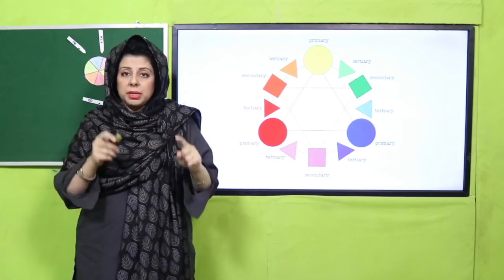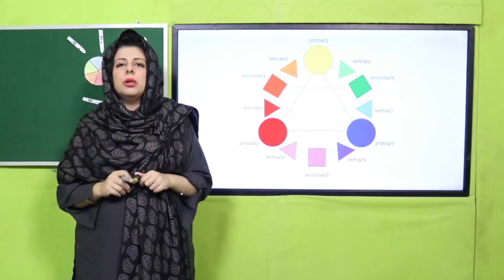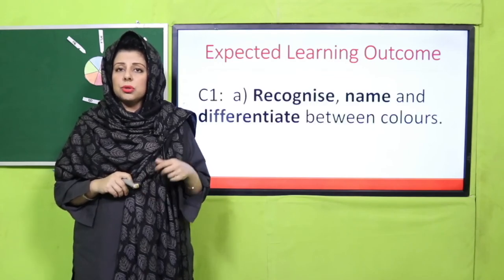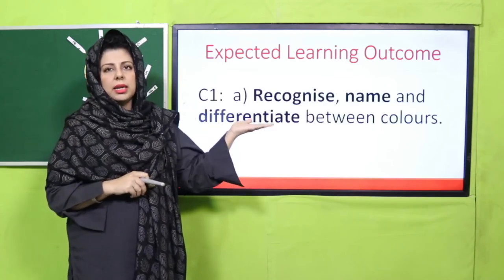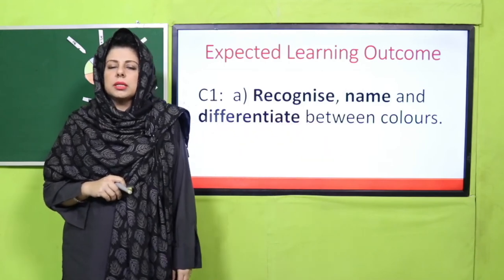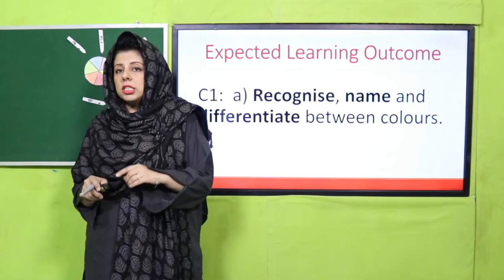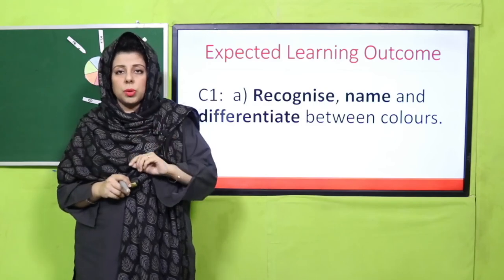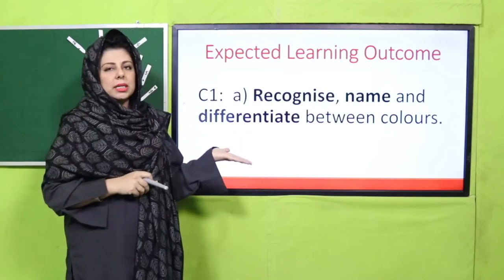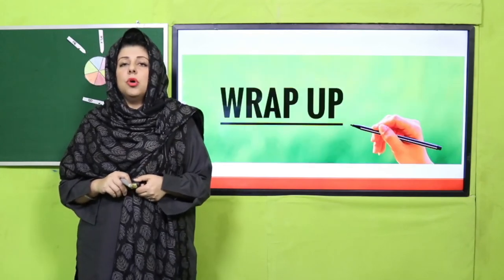You will be able to recognize and differentiate between - yes - primary, secondary and tertiary colors. Yeh teeno jo hum ne ELO mein discuss kiye the - hamara ELO kya kya raha tha bachon? Recognize, name and differentiate between colors. So I hope by the end of this lesson, and especially when you will complete your homework and worksheet, you will be able to complete this ELO in the full form.